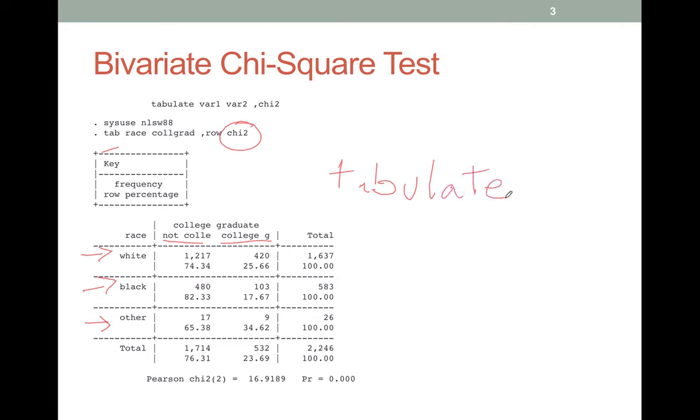And there's your Pearson chi-square statistic and our p-value. In this case, we can strongly reject that the distributions are the same, whether that's the race distributions for college educated and not college educated, or the college distributions for each race group.